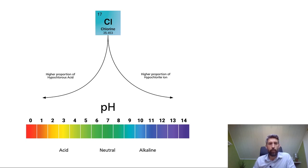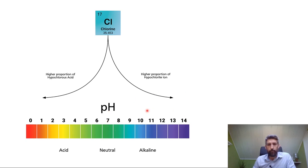What we've got is the chlorine turning into either hypochlorite ion or hypochlorous acid. These two substances are what you're measuring when you do a DPD-1 test on free chlorine. As you can see, according to what the pH level is, as the pH level gets higher and higher, you're getting more hypochlorite ion. But when the pH level goes lower, you're getting more hypochlorous acid.